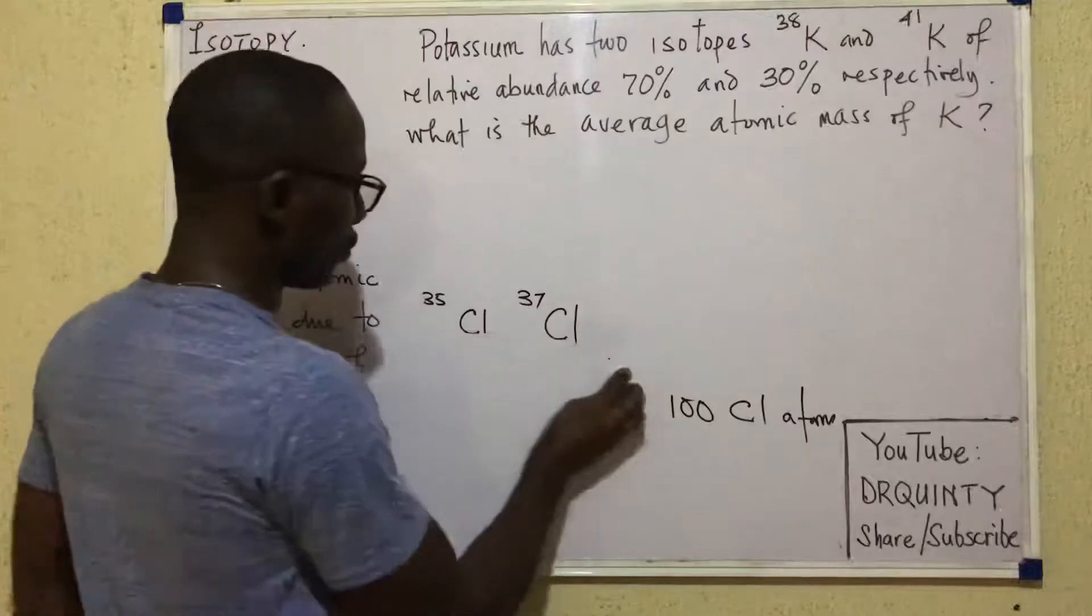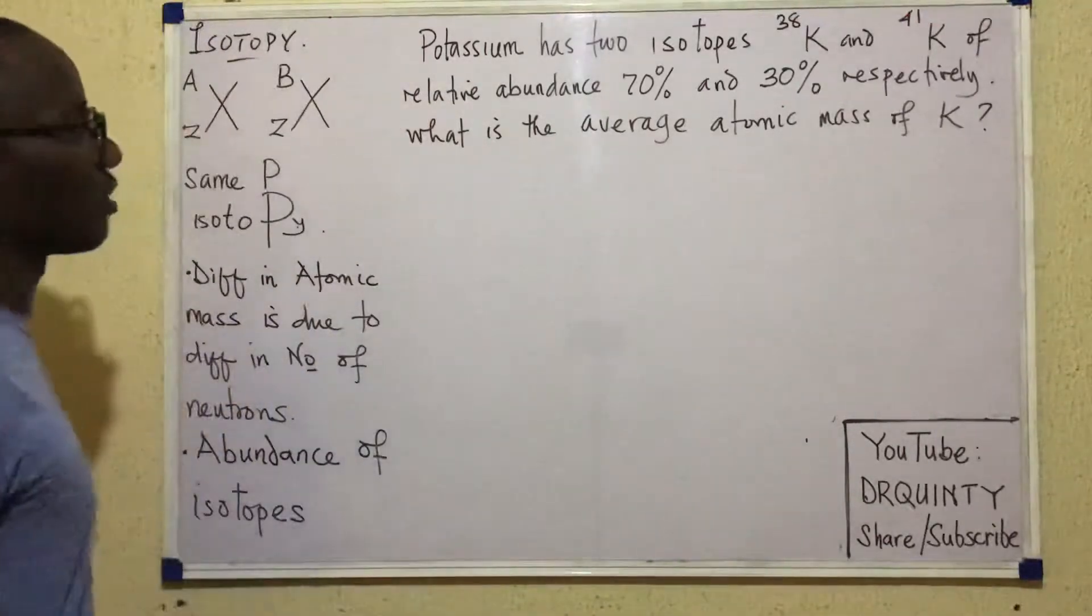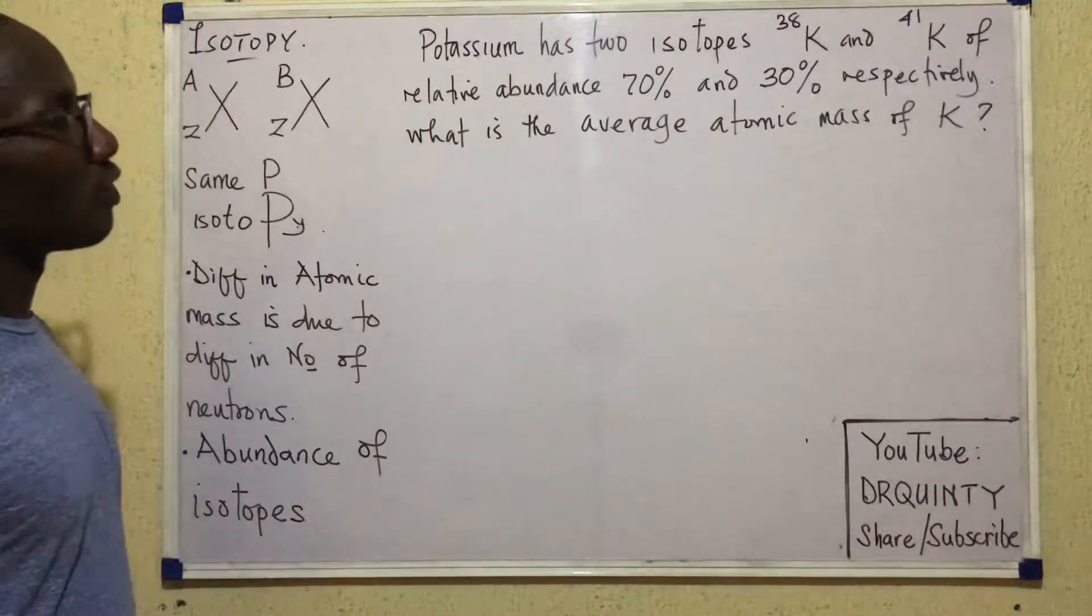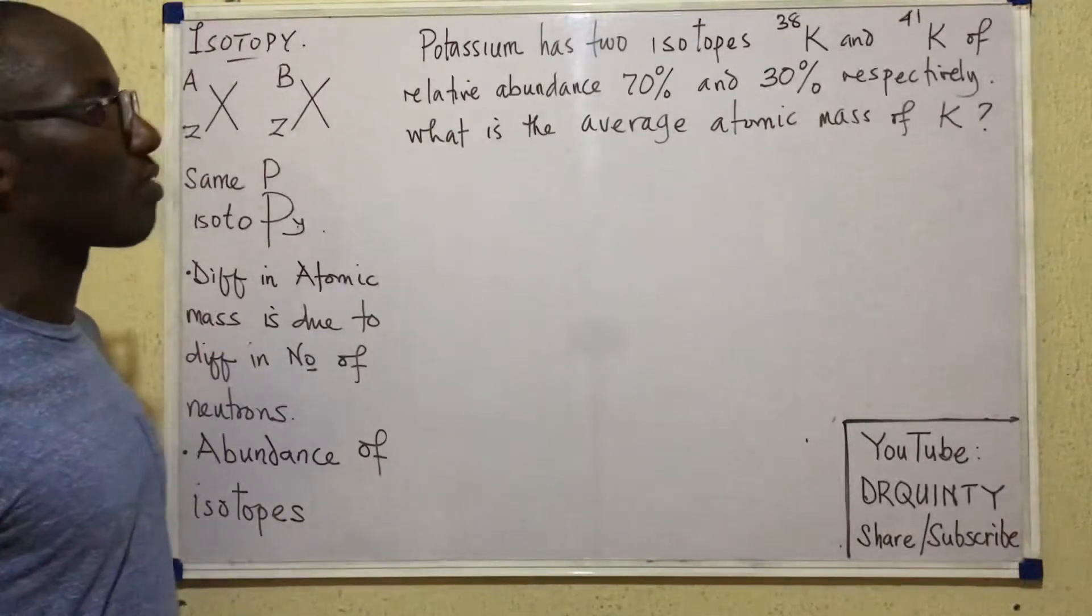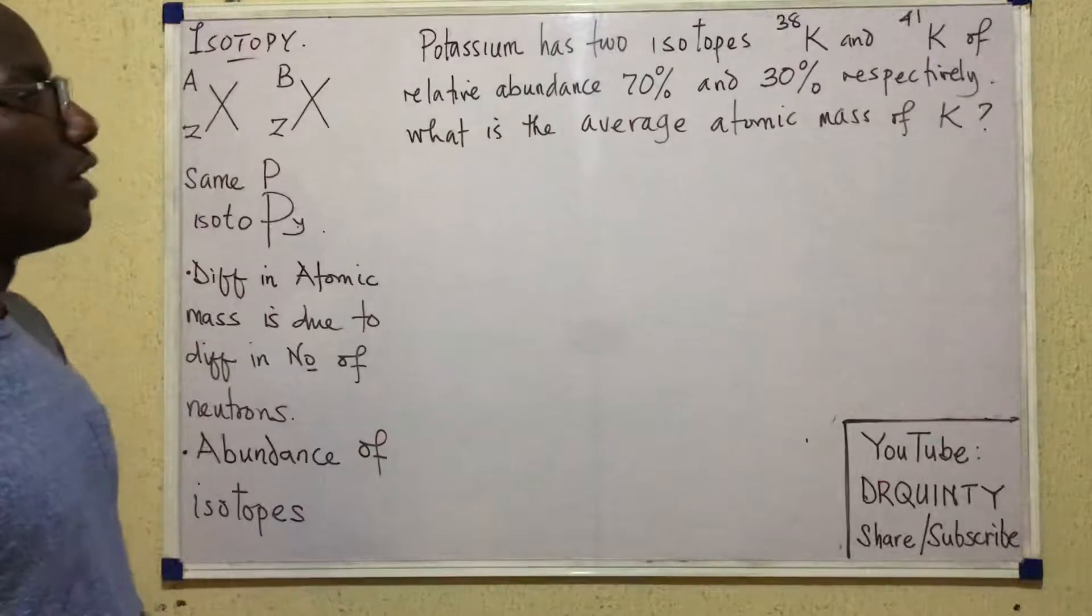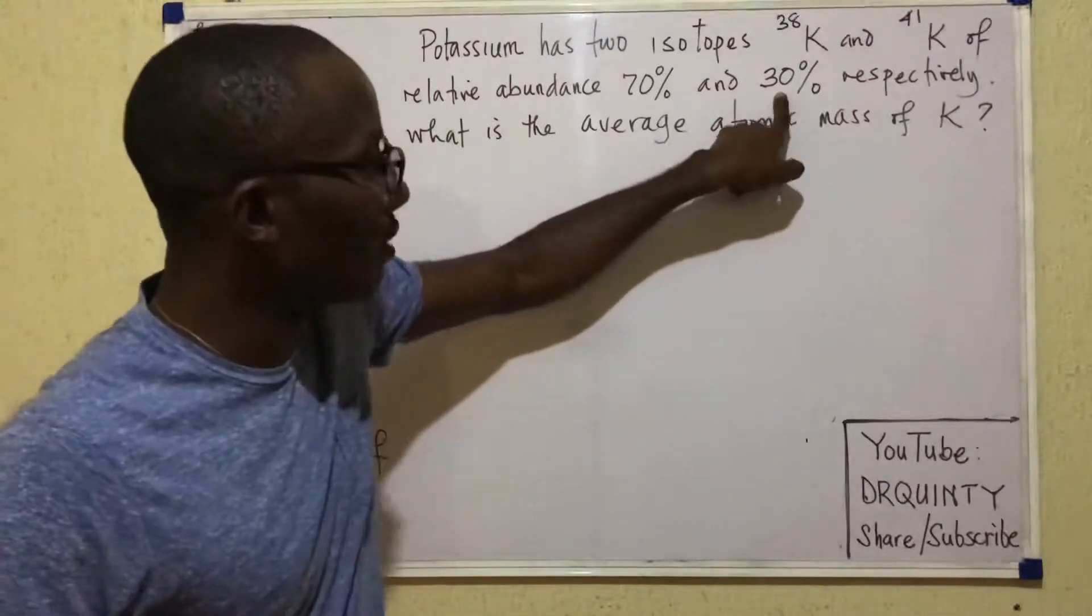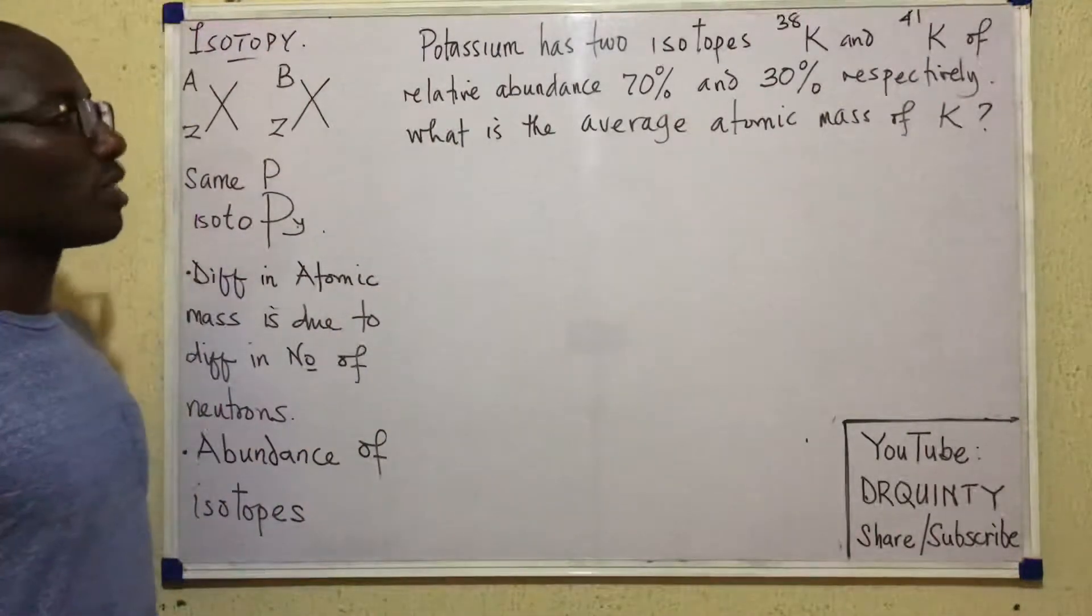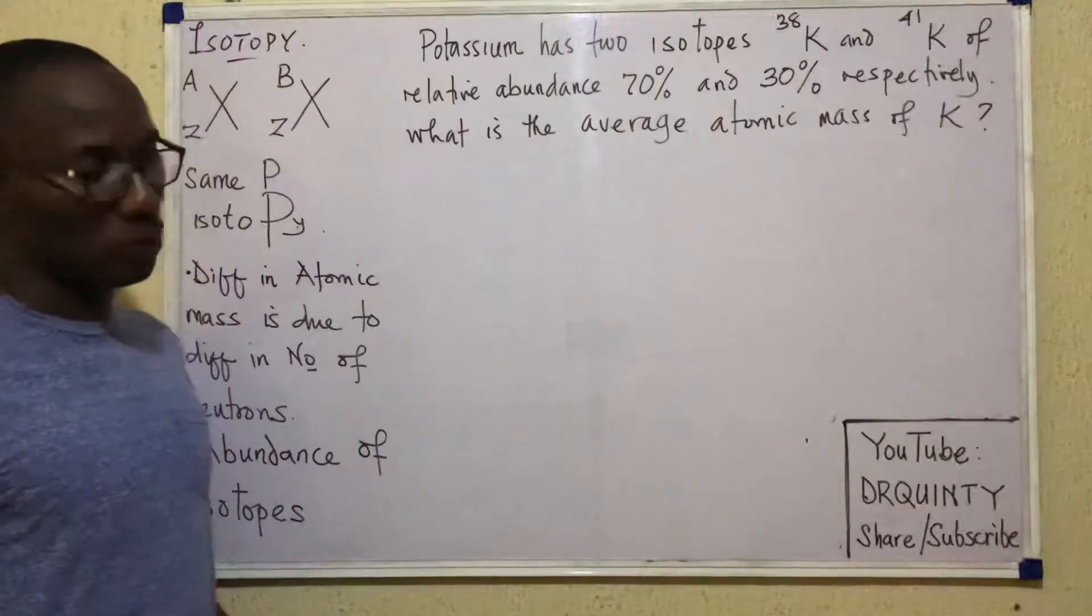Now leaving the meaning of abundance, when we are asked to do calculations in isotope, the questions will usually come like this. So this one says, potassium has two isotopes, 38 K and 41 K of relative abundance, 70% and 30% respectively. So it means that this abundance is for that guy, whereas the other abundance is for the 41 isotope. Now what's the question? It says, what is the average atomic mass of K, potassium?